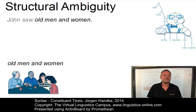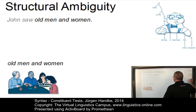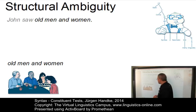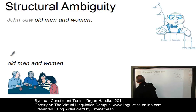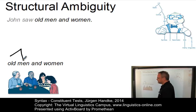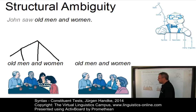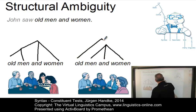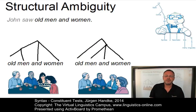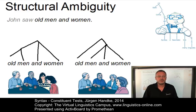This difference can be represented by means of a hierarchical representation where specific constituents can be worked out. In the first case, where just the men are old, we will probably build an independent constituent that links 'old' with 'men,' and this can be conjoined with 'and women' at a later stage. In the second case, where everyone is old, we have 'men and women' that build a constituent and at a later stage they are conjoined with 'old.' So, cases like these, referred to as structural ambiguity, can most adequately be represented by means of a constituent analysis.